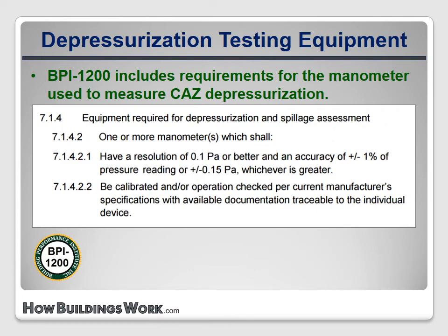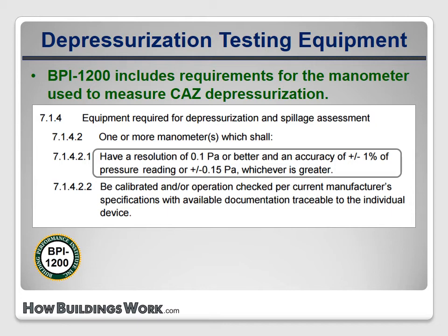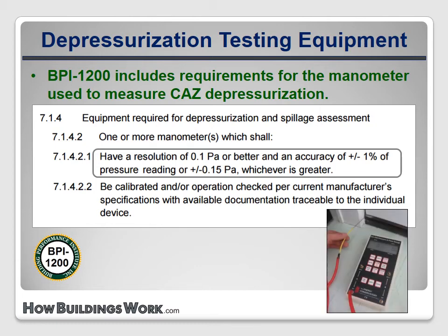BPI 1200 also includes resolution and accuracy requirements for manometers used to set up the combustion appliance zone in a worst-case configuration. The commonly used manometers supplied with blower door kits meet these specifications. However, some of the less expensive manometers often used by HVAC techs for static pressure measurements do not.